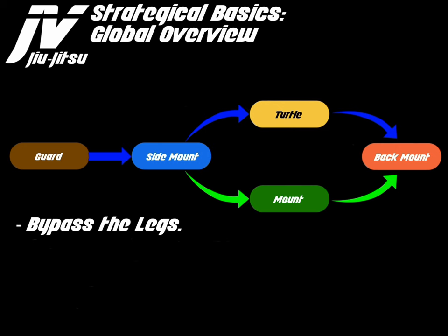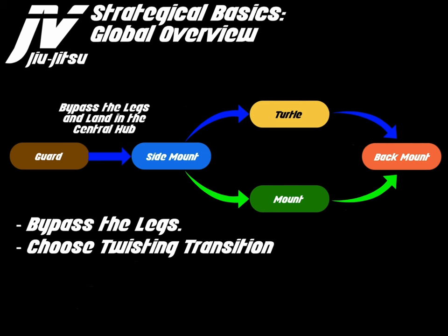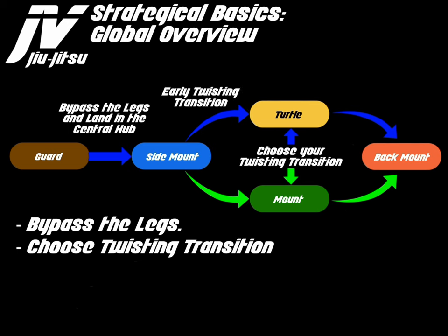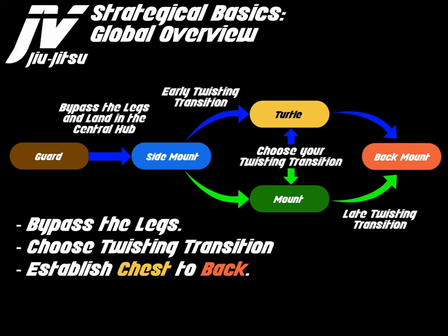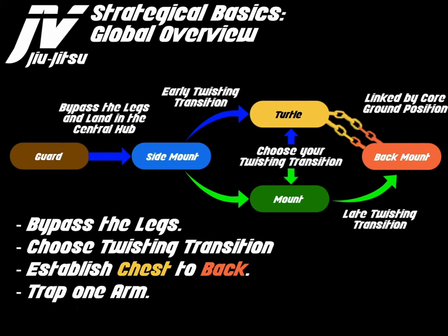The first part is to obviously bypass the legs, and then you land in the central hub, which is sidemount. Then you have a choice of choosing a twisting transition — either transitioning to turtle or transitioning to mount. The sidemount-to-turtle transition is what I would consider an early twisting transition, and the transition between mount and backmount is a late twisting transition. Establish chest-to-back, which is linked by a core ground position, then trap the arm, and then finally attack the neck.